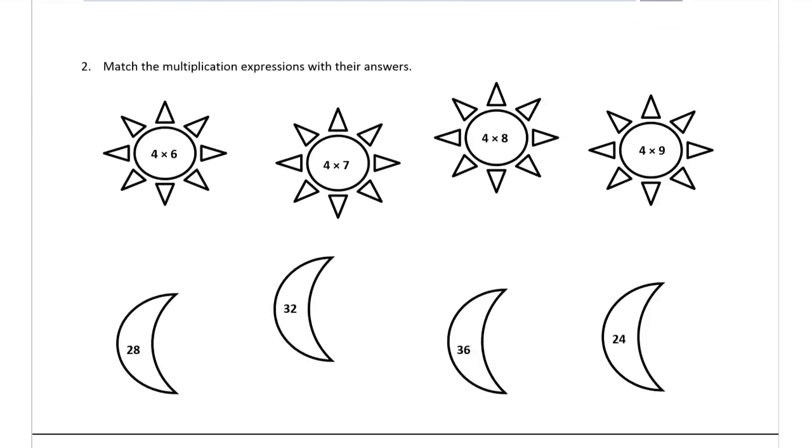Number 2. Now we're looking at matching the multiplication expressions with their answers. These are multiplication expressions. They're not equations because they don't have equal signs. They're not sentences because they don't have equal signs. They're just expressions. An expression can just be a number. It could be almost anything. But these are just expressions.